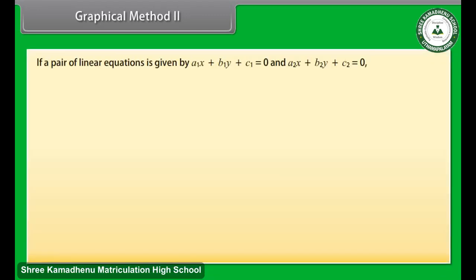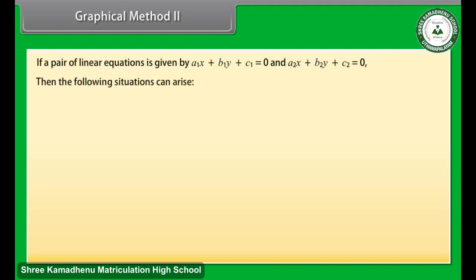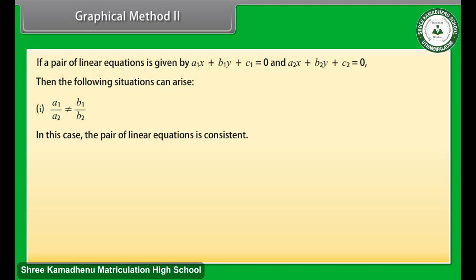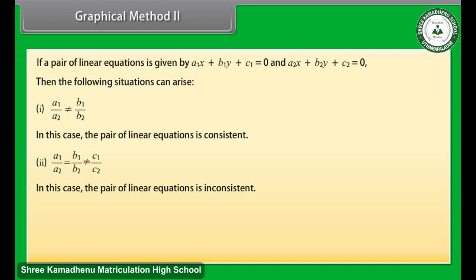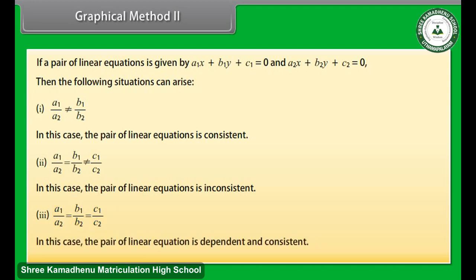If a pair of linear equations is given by a1x + b1y + c1 = 0 and a2x + b2y + c2 = 0, then the following situations can arise: 1. If a1/a2 ≠ b1/b2, the pair of linear equations is consistent. 2. If a1/a2 = b1/b2 ≠ c1/c2, the pair of linear equations is inconsistent. 3. If a1/a2 = b1/b2 = c1/c2, the pair of linear equations is dependent and consistent.